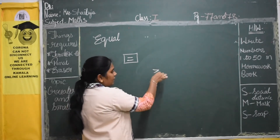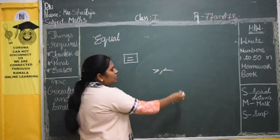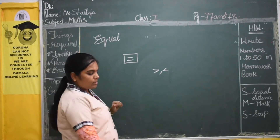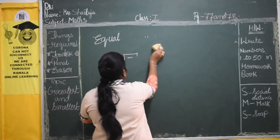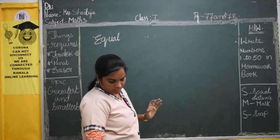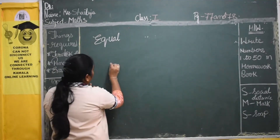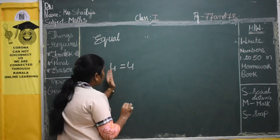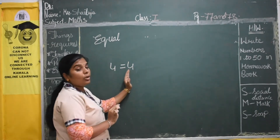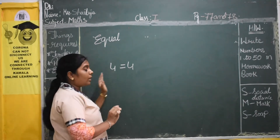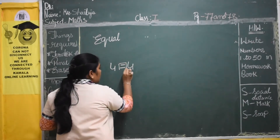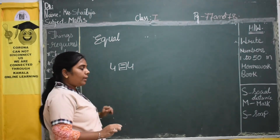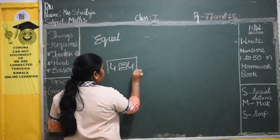This is greater than, this is less than, and this is equal. So now here 4 equals 4. Here we have 4 and here also we have 4. So both numbers are 4, and we use this symbol to represent equal. Understood, children?